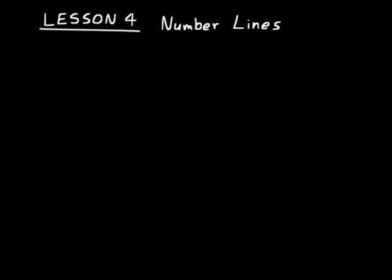One thing we use number lines for is to compare different numbers — compare their size, how big they are relative to each other. When we draw a number line, the first thing you do is just draw a line. You denote a line by arrows on the ends, which defines a line as continuing in both directions forever. Of course, you can't draw it forever, so you put arrows on the ends to show it continues on in those directions forever and ever.